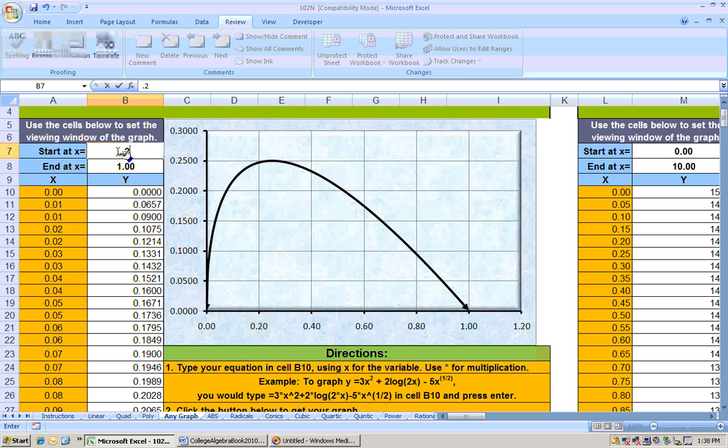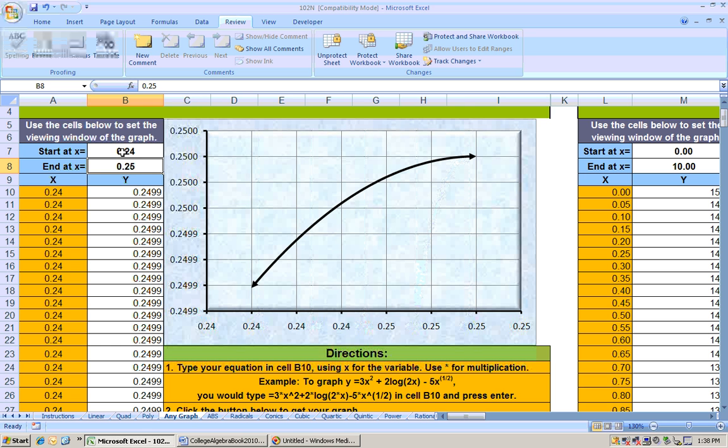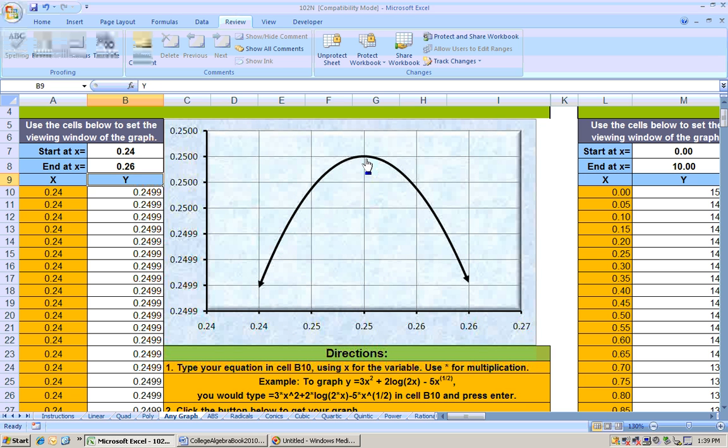Maybe go from 0.2 to 0.25 on the graph. And actually, I didn't go out far enough, so let's go from 0.24, we'll get real narrow here on this, 0.24 to 0.26, and I think we can tell right here is the maximum. So the maximum occurs at an x value of 0.25, and the height will be 0.25.